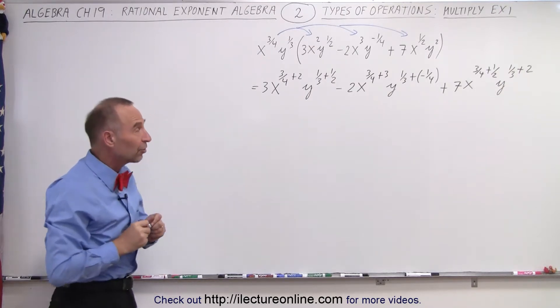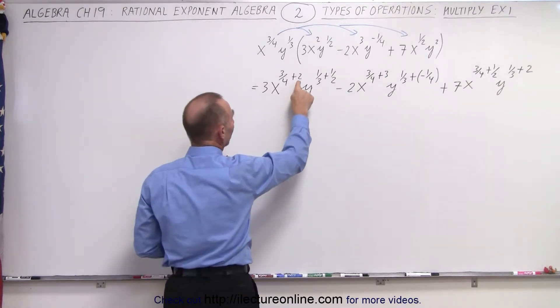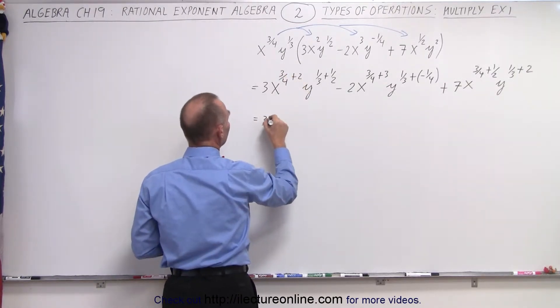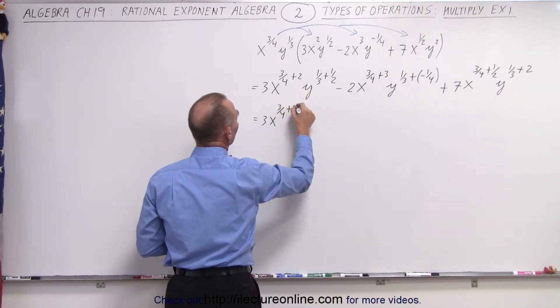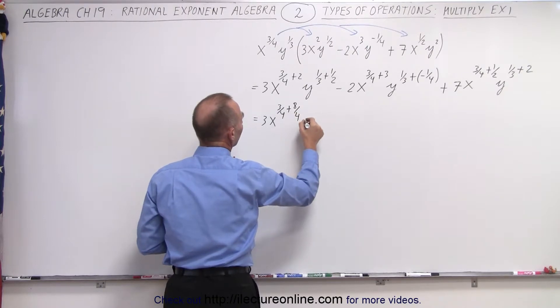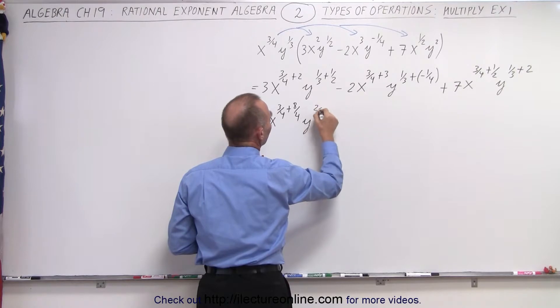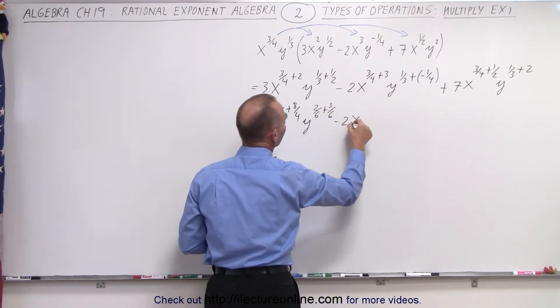Now, if the denominators are different, we need a common denominator. For example, here we're adding a whole number, two, to three quarters, so we're going to rewrite this as three x to the three quarters, and two can be written plus eight quarters times y to the, now notice the common denominator would be six, so it would be two sixth plus three sixth.